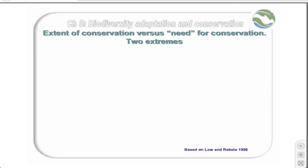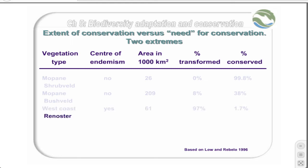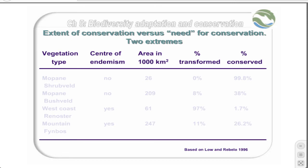Based on the vegetation types shown previously, two extremes of conservation strategies can be seen. With the Mopane veld, there are very high levels of conservation despite the fact that this area is not a centre of endemism and there is almost no transformation of this vegetation type. By contrast, the west coast Renosterveld is almost totally transformed, yet only 1.7% of it is conserved. Mountain Fynbos has a far lower level of transformation, due primarily to the fact that the mountains can't be used for other land uses such as agriculture, and therefore a far greater percentage is under conservation.